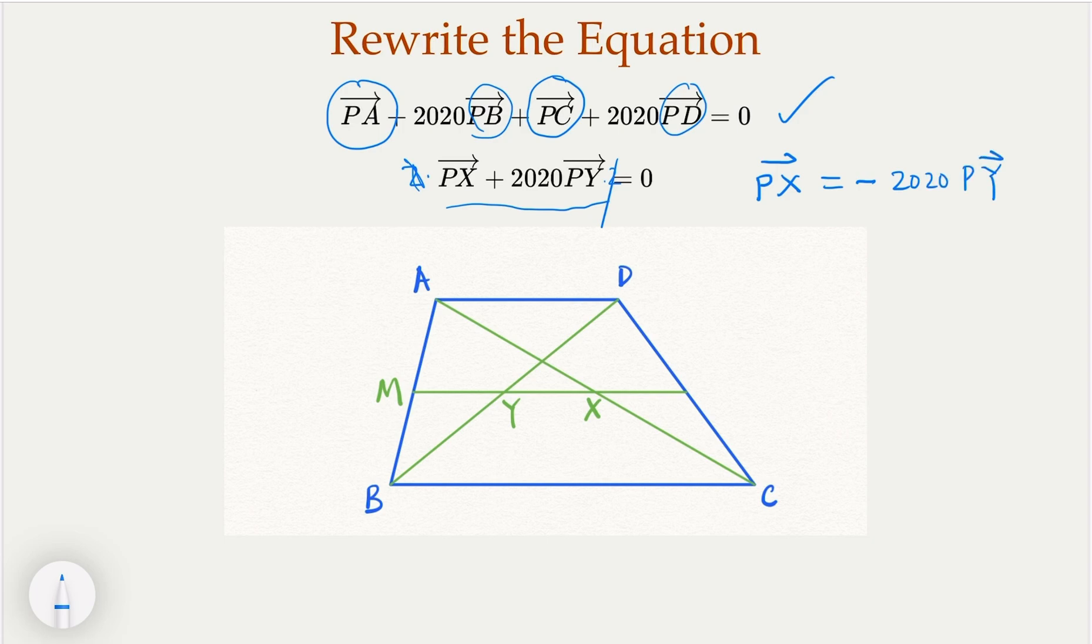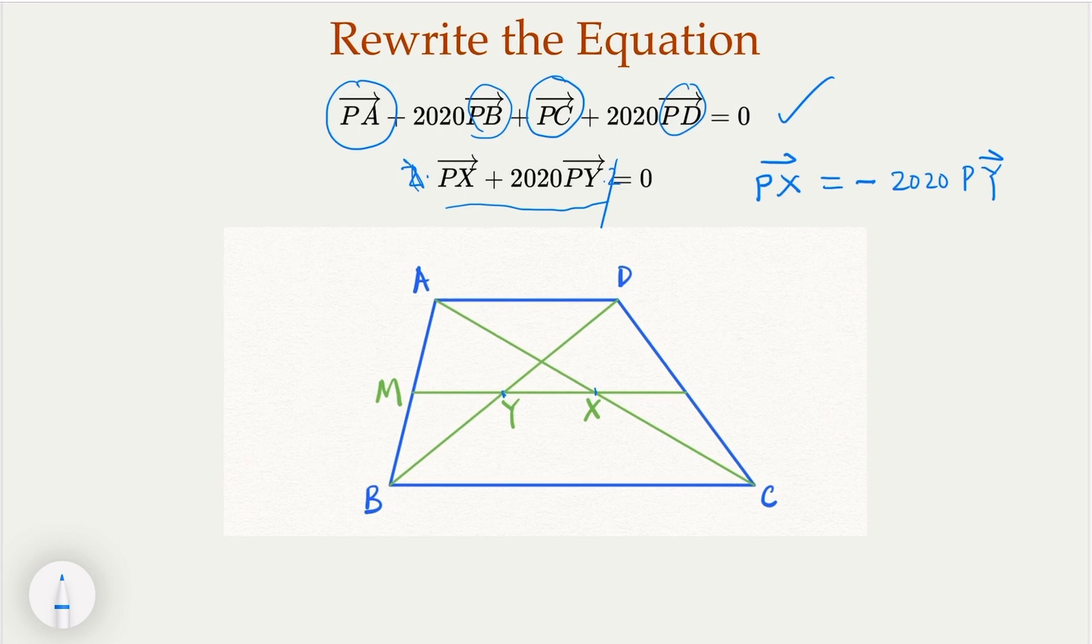In other words, PX is just opposite direction of PY. So this just shows that P as a point must lie down on the line segment of XY. So we have X, we have Y, which is a midpoint of AC and BD. So this equation tells us that P cannot be here. If it's here, they're not going to be in the opposite direction. So only way for them to be opposite direction, P must be within this line segment here. And of course, PY is very tiny. PX in terms of magnitude is 2020 bigger than that. So P is somewhere here, very close to Y. That is what we know from the equation.